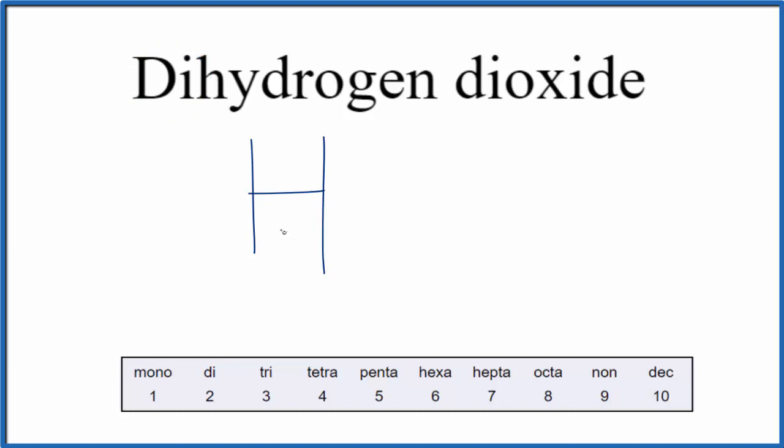The di in front tells us that we have two hydrogen atoms, so we'll have H2, then oxide.